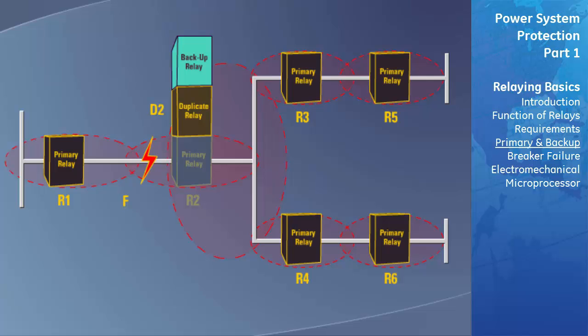However, let's assume that relay D2 of the duplicate system has also failed. The local backup relay, L2, should now operate a short time after the primary and duplicate relays due to its coordination with them. If all three fail, the backup function of relays R3 through R6 is to provide remote backup to R2, D2, and L2. Relays R3 to R6 will initiate breaker failure logic to trip all the adjacent breakers, which are feeding this fault if the primary or backup protection fails.